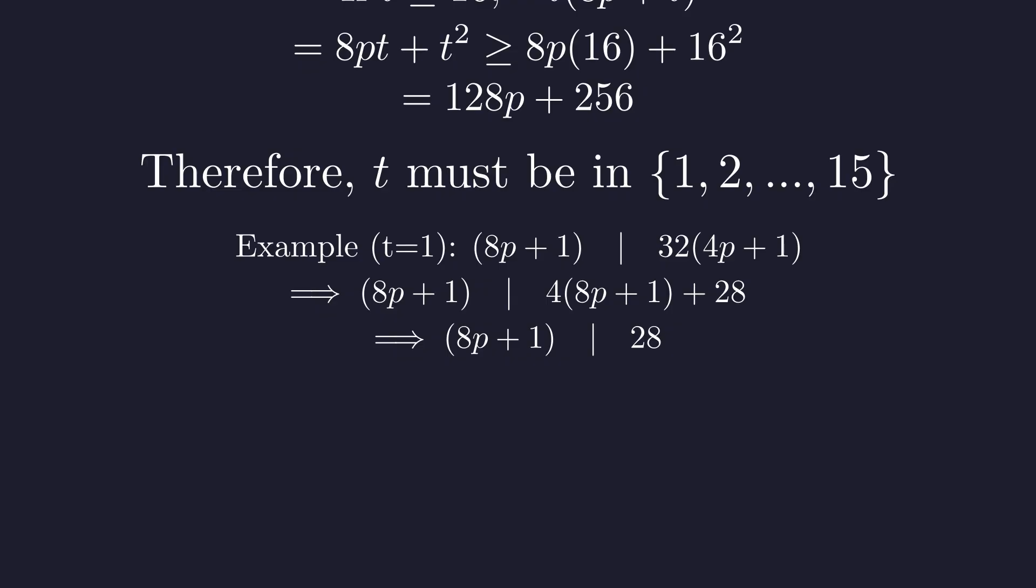When you check all 15 possible values of t the same way, you'll find that none work. Case 2 really is impossible. And there you have it. Case 1 gives us exactly three solutions. Case 2 is impossible. The constraints of number theory have spoken. Just three little primes emerge from this seemingly complex equation. It's beautiful how restrictive the integer constraints become.